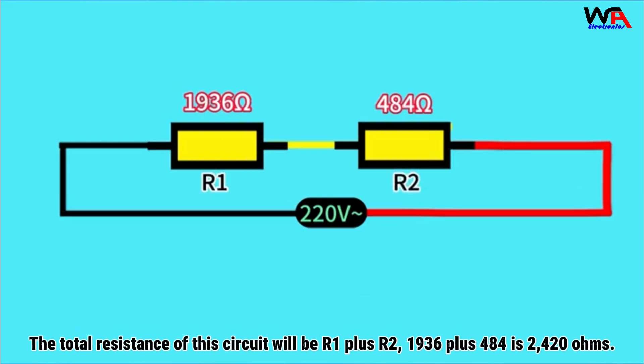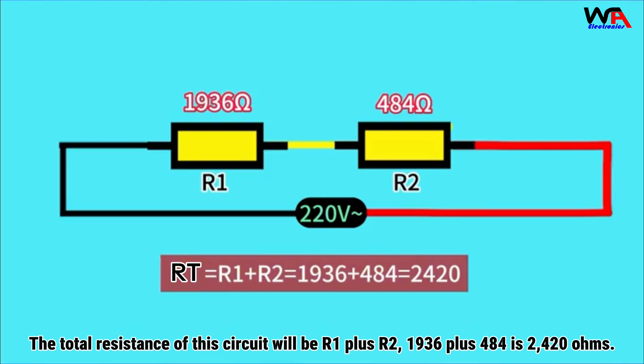The total resistance of this circuit will be R1 plus R2: 1936 plus 484, which is 2420 ohms.